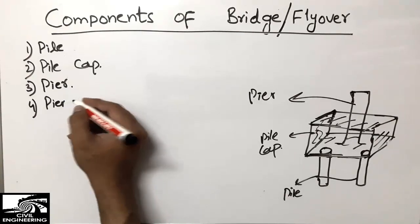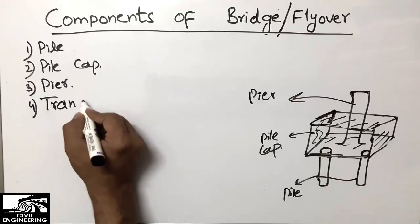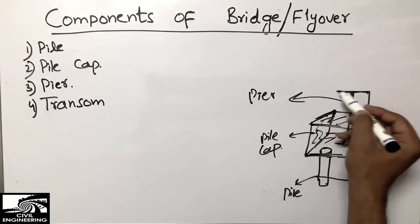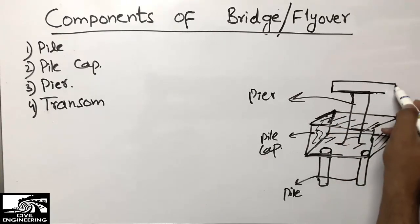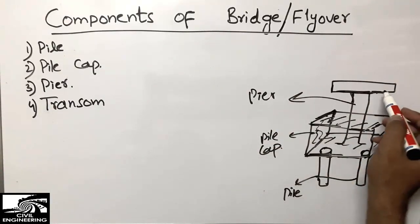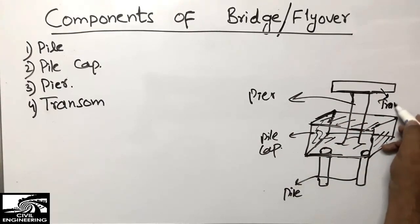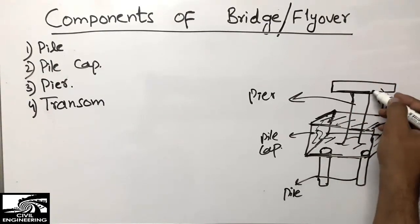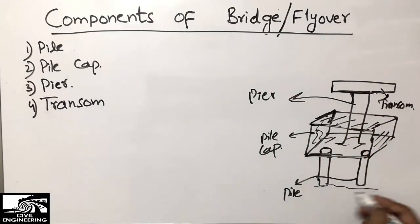After the pier, the fourth component is the pier shaft, also called the transom. The transom may be of any shape depending on the design — triangular, trapezoidal, or whatever the designer chooses. The transom is the load distribution part: it transfers the load to the pier, from the pier to the pile cap, and from the pile cap to the piles, which transfer it to the soil.